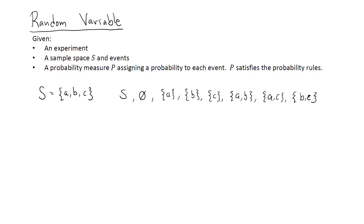So we have the following eight events. It is not necessary to consider all possible events, which we have done in this example. Finally, we have a probability measure assigning a probability to each event, so each of these eight events must be assigned a probability and these probabilities must satisfy the probability rules. For this example, let's say each outcome is equally likely, so the probabilities are 1 for S, 0 for the empty set, and 1/3, 1/3, 1/3 for the singletons, and 2/3 for each two-element event.